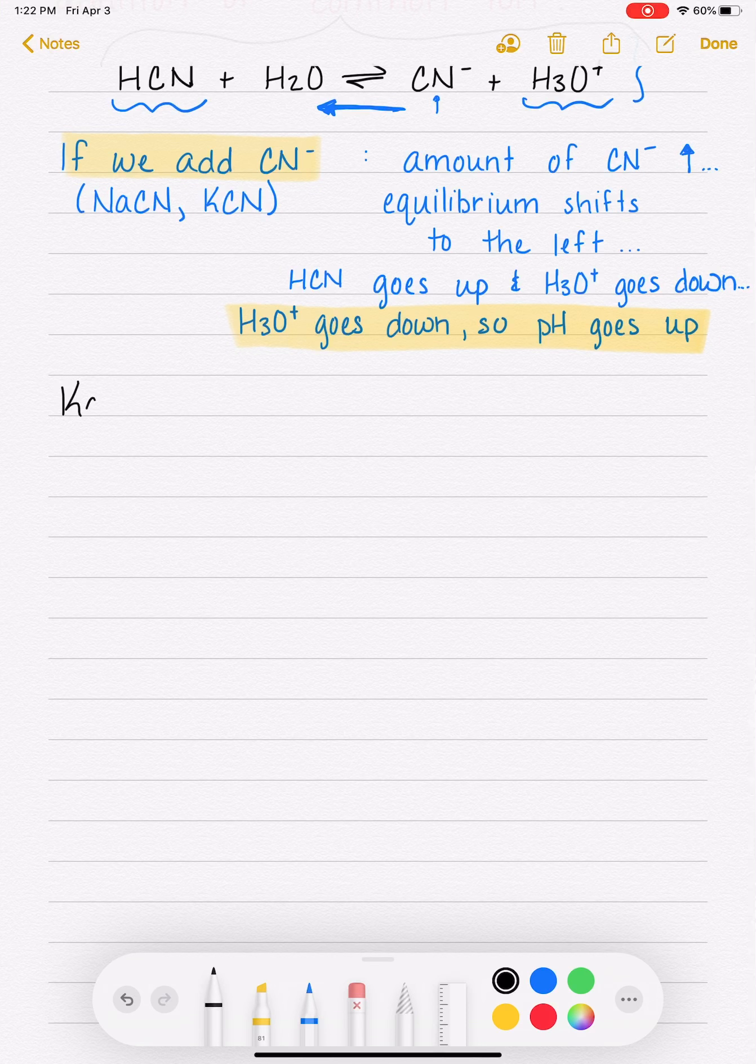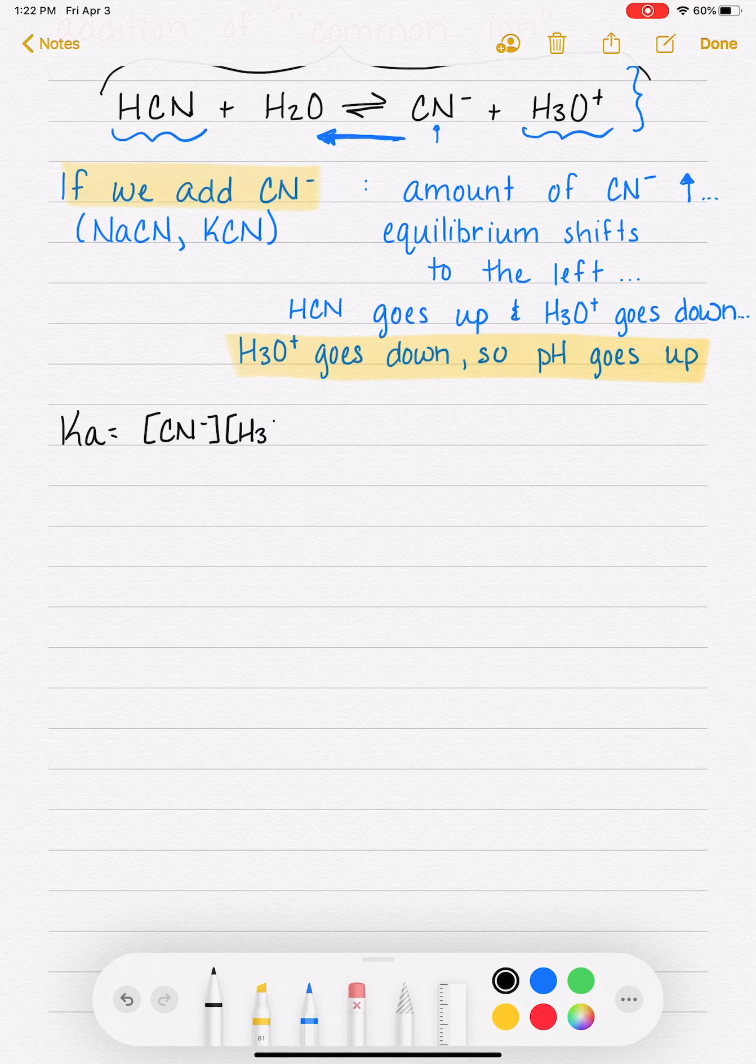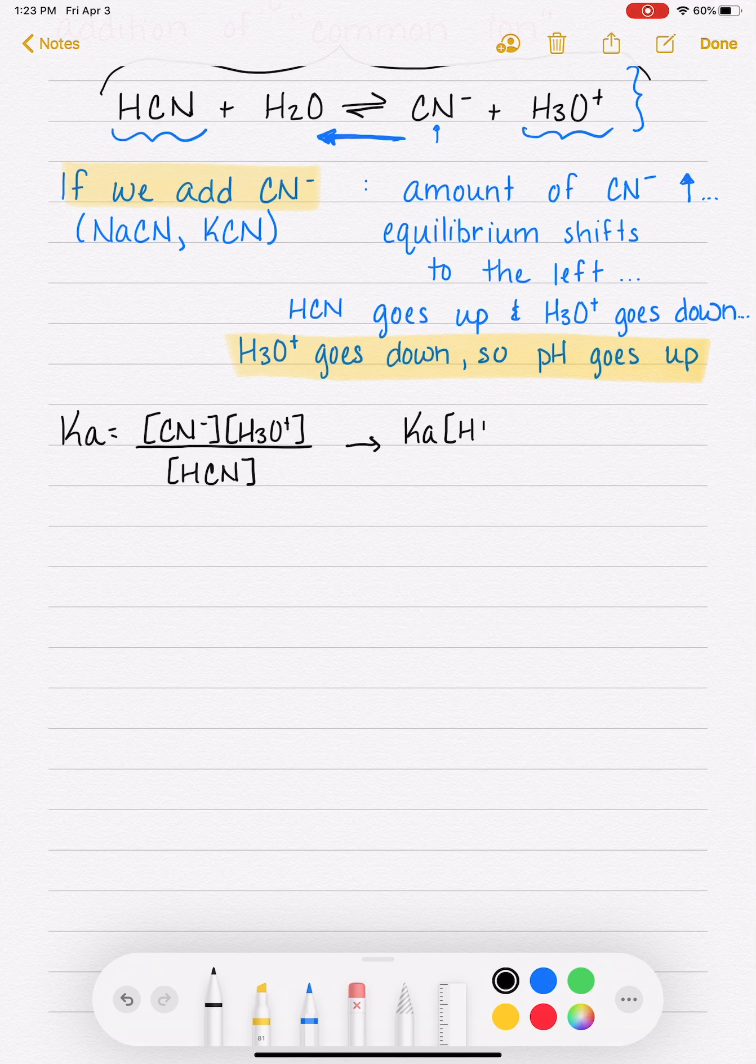So let's derive a way for us to quickly calculate the pH after we add a common ion. So as you know, for this HCN reaction, we can write an equilibrium expression: products CN minus times H3O plus over the reactant HCN. And we can rearrange that mathematical equation. So now it says Ka times HCN equals CN minus times H3O plus. I'm just doing algebra.